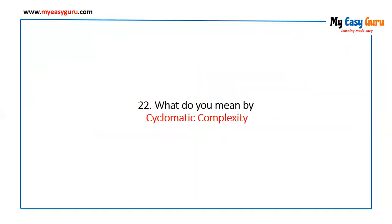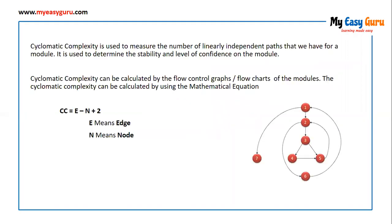The next question: what do you mean by cyclomatic complexity? Cyclomatic complexity is used to measure the number of linearly independent paths that we can have for a module. It is used to determine the stability and level of confidence on the module. It can be calculated by flow control graphs or flow charts, using the equation: CC = E - N + 2, where E means edges and N means nodes.